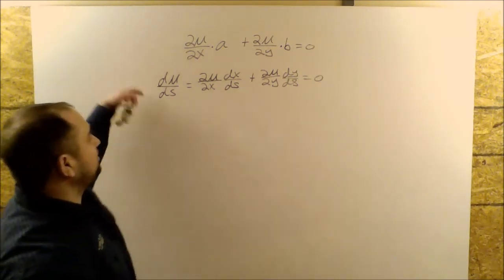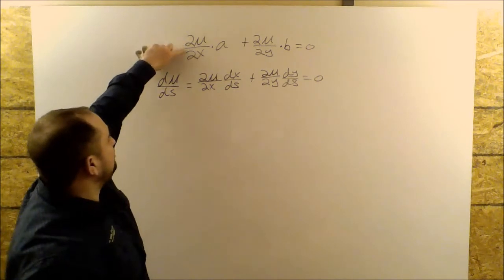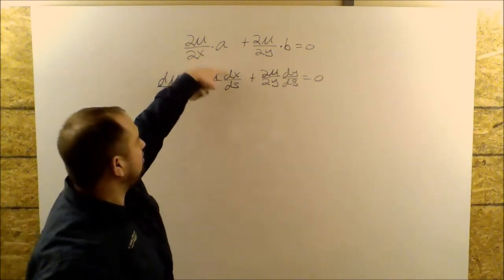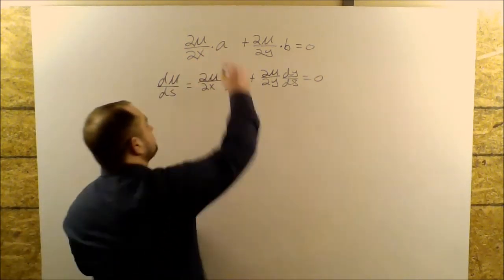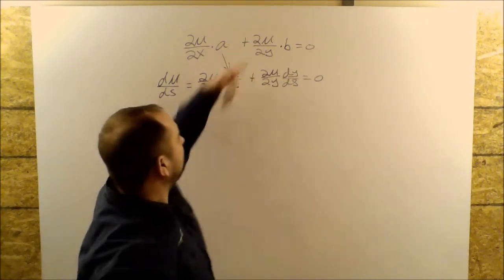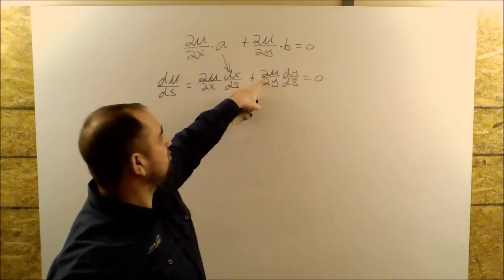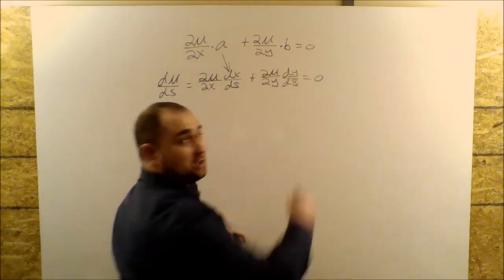And so now we just compare the two equations. I have partial U partial X in both equations, so these coefficients have to be equal. Likewise, I have partial U partial Y in both, so these coefficients have to be equal.